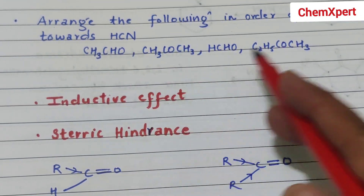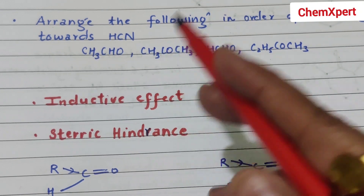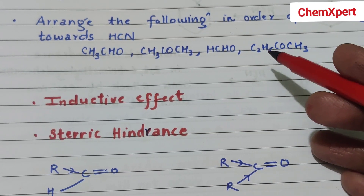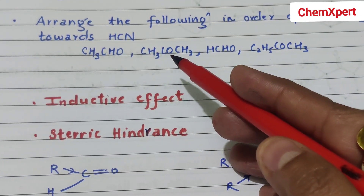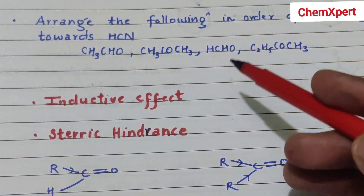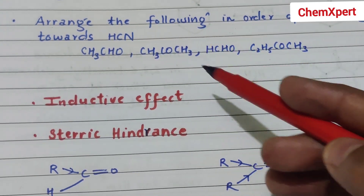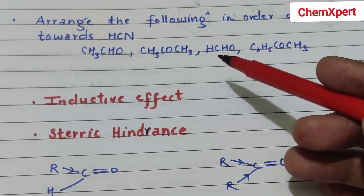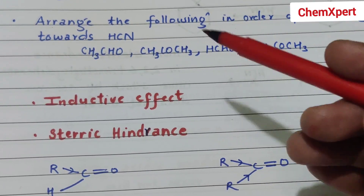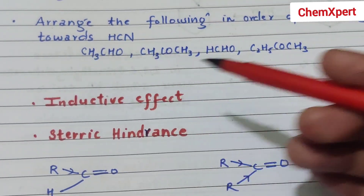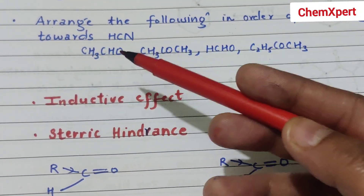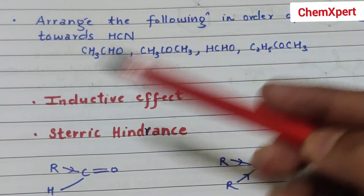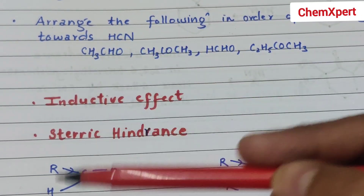Out of four compounds, two are ketones, and the ketone with greater chain length will be less reactive. The order is: ethyl methyl ketone is the least reactive, then propanone, then ethanal, and the most reactive is methanal because no alkyl group is present. In case of aldehydes, smaller the alkyl group, greater the reactivity, so methanal is more reactive than ethanal. If benzaldehyde and ethanal are compared, ethanal is more reactive because benzaldehyde has a bulkier aromatic group.